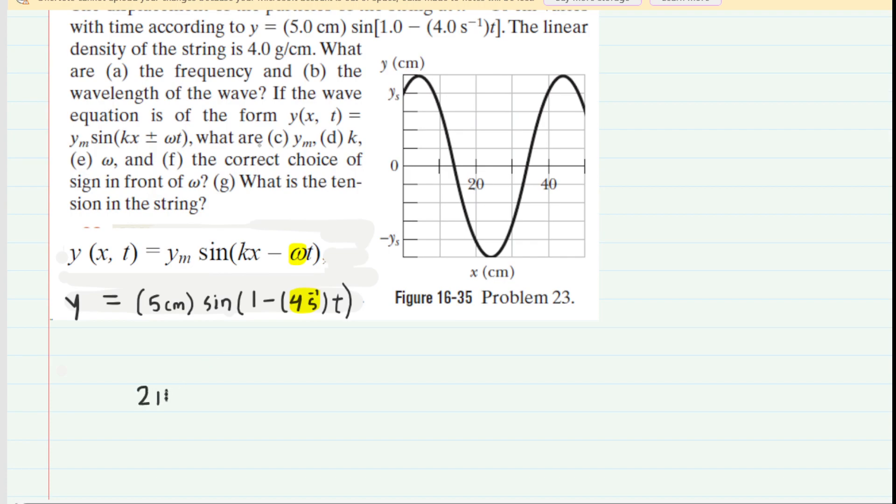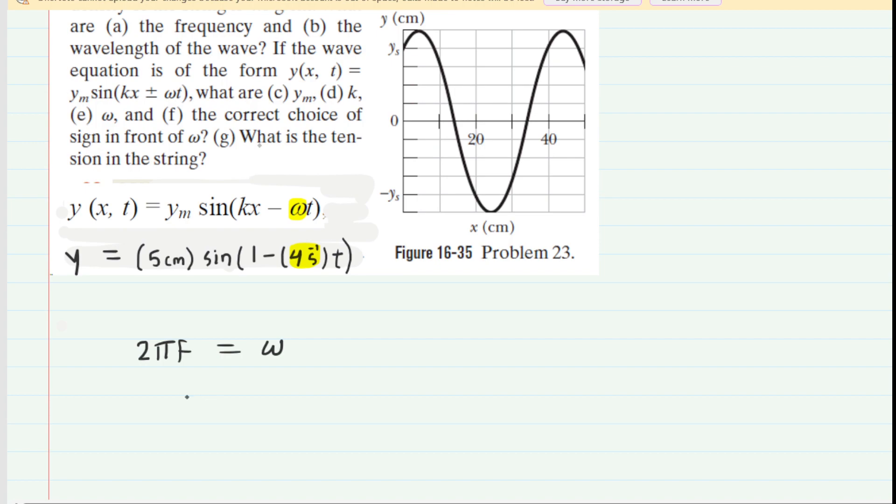You probably have learned that 2π multiplied by the frequency is equal to the angular frequency, so if we divide both sides of that equation by 2π, we would have the frequency equals the angular frequency divided by 2π. We can plug in the value for the angular frequency, which was stated to be 4 inverse seconds, and then divide that by 2π. When you compute that, you would get about 0.64, and the standard unit of frequency is hertz. This is the correct answer to part a.